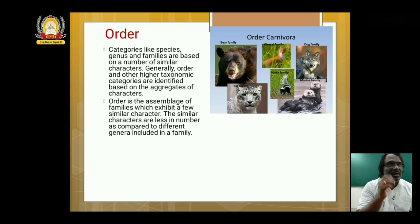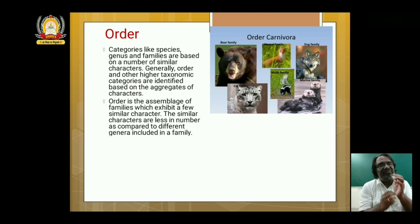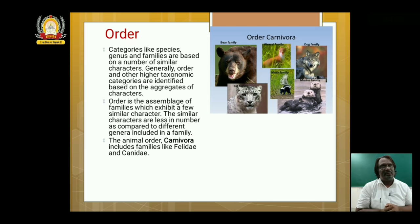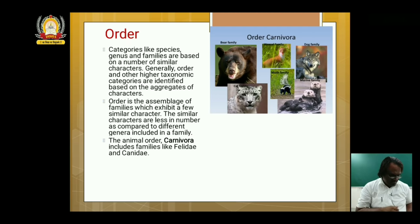Order Carnivora has a dog family, it has a bear family. So in order Carnivora you find different varieties joined together. The order Carnivora includes families like Felidae — which includes the cat family — and Canidae — which includes the dog family. Both are in the order Carnivora.